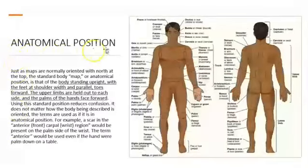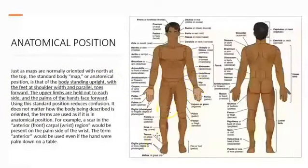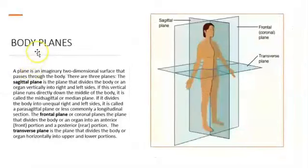The next part is anatomical position. As you can see in this figure, anatomical position is the position that helps us identify different regions and areas in our body. In anatomical position, the face is facing forward, arms are on each side and not crossed, the legs are slightly open, and the palms are facing forward. The anatomical position can be divided into different areas using planes.